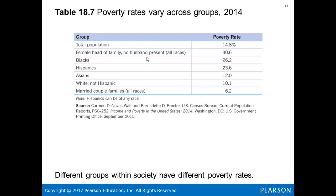Breaking down poverty rates further: Blacks, 26.2%; Hispanics, 23.6%; Asians, 12%; White non-Hispanic, 10%. However, for married couples of all races, the poverty rate drops to just 6.2%.